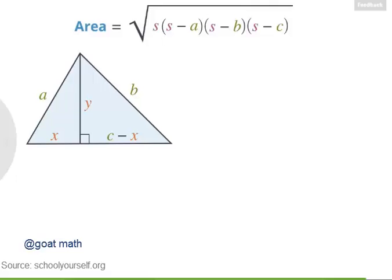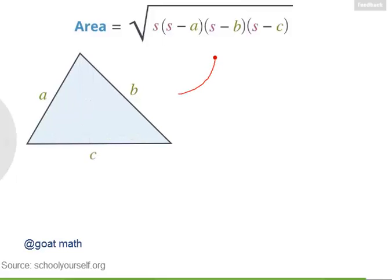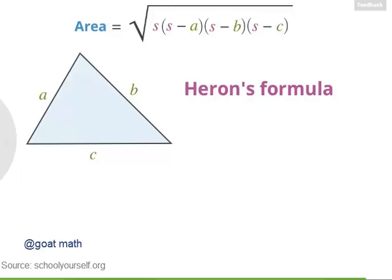So after all that hard work, we now have a neat little formula for the area of our triangle: the square root of s times s minus a times s minus b times s minus c. By applying the Pythagorean theorem to two right triangles and then using a lot of algebra, we found this formula for the area of a triangle in terms of its three side lengths. This is, of course, Heron's formula. That was a very challenging proof — very well done.